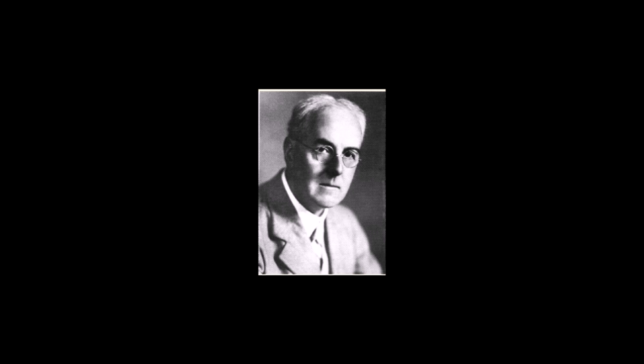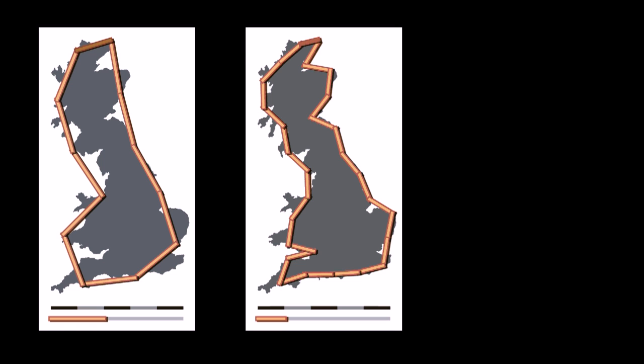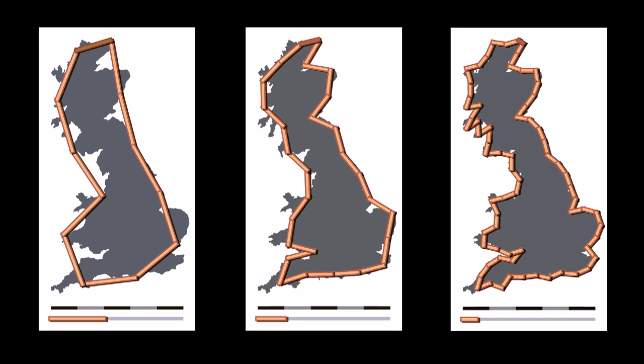Lewis Richardson asked himself if the length of countries' borders has anything to do with the number of wars a country had gone into. However, while collecting data he found that the smaller the ruler was, the longer the border was. You may think that's obvious — the smaller the ruler, the more precise the measurement is. But what was not obvious was that this measurement didn't converge to any finite number; instead the length was infinite.